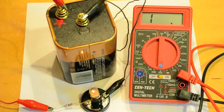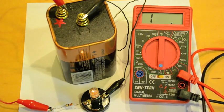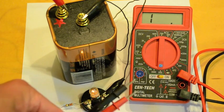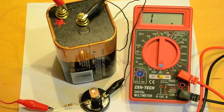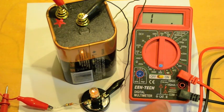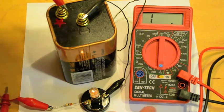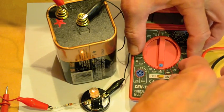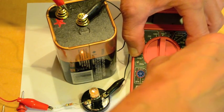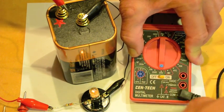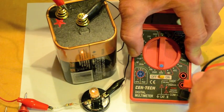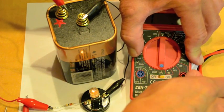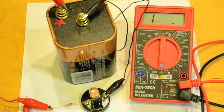Now the probe leads are connected differently to measure resistance. So what we have to do is the black lead stays in the COM or common setting but the red lead has to plug into the socket that says omega. So you look for the omega symbol and that's where you plug it in. If you don't do that you're not going to be measuring ohms.